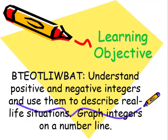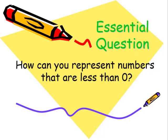By the end of this lesson, I'll be able to understand positive and negative integers and use them to describe real life situations, as well as graph integers on a number line. Our essential question is, how can you represent numbers that are less than 0?